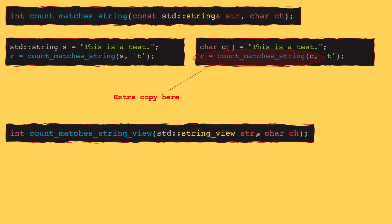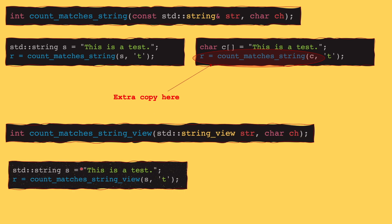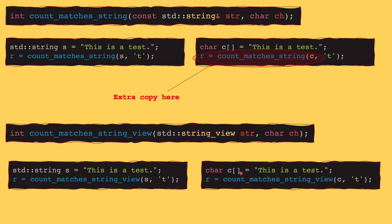Now, if you change this parameter to a string view, you could still call this function using a string — there's still not going to be any heap allocation. String view works just like a thin wrapper around a string, so we still have the same flexibility. However, when you call this function with a C-style string, string view acts as a thin wrapper around our C-style string. There's not going to be heap allocation, there's not going to be copying. Therefore, it's much more efficient to use a string view rather than a const string reference.